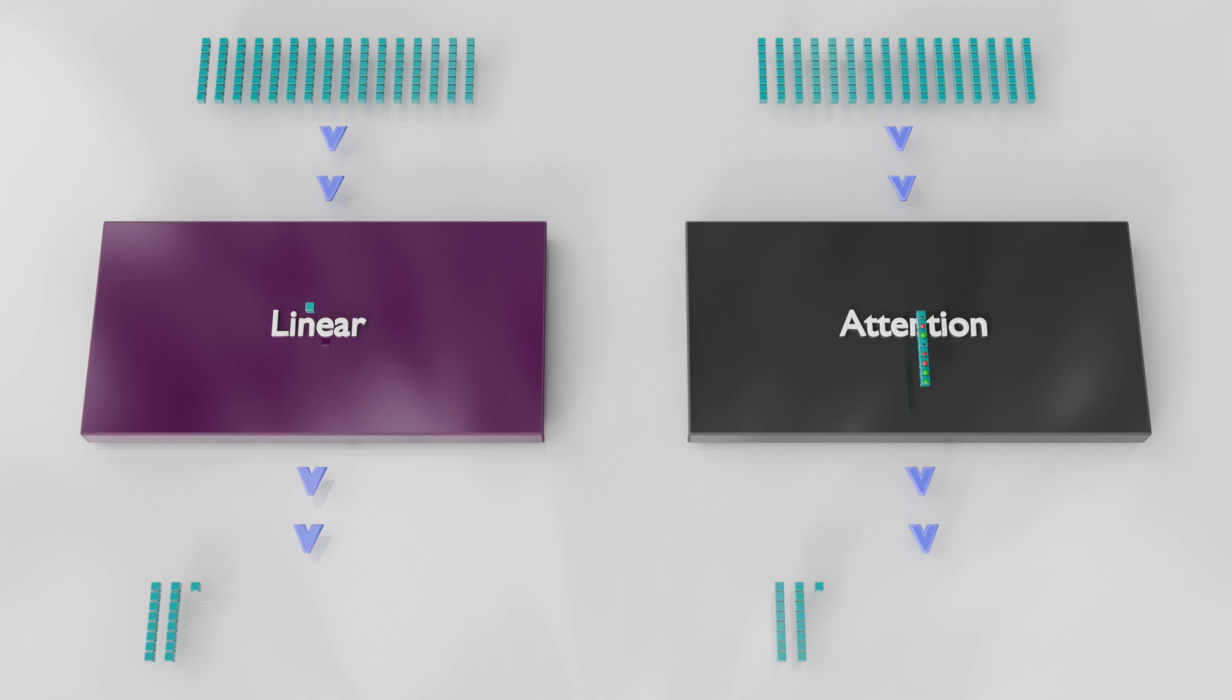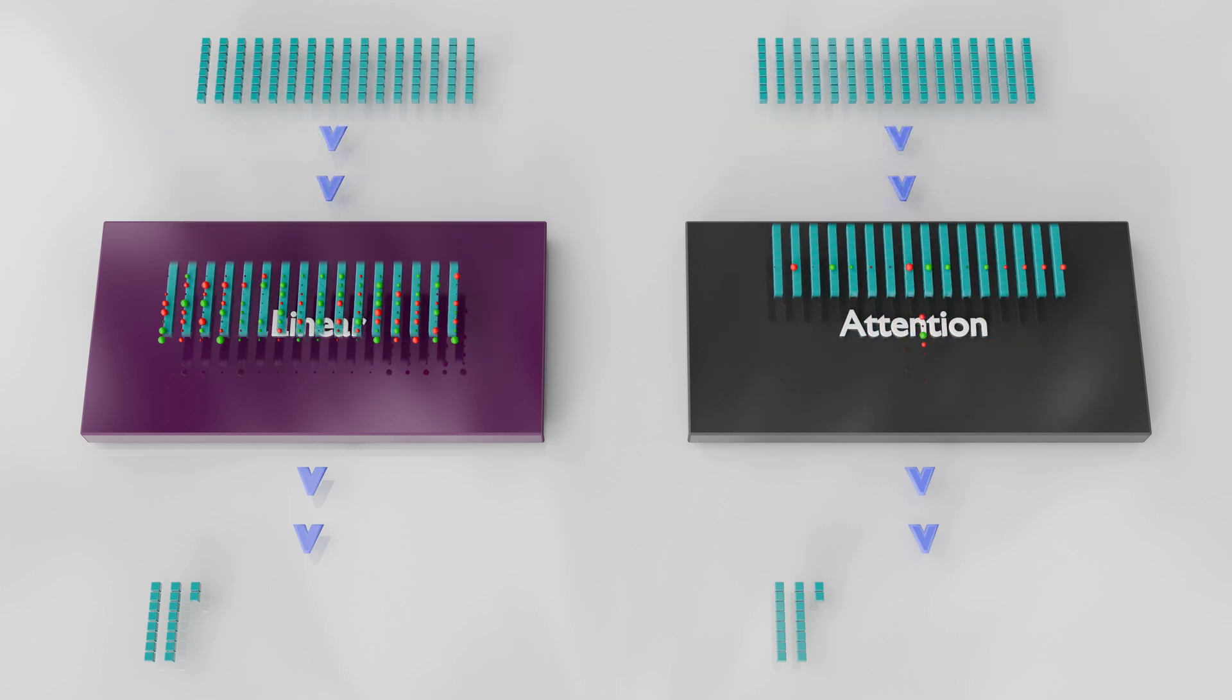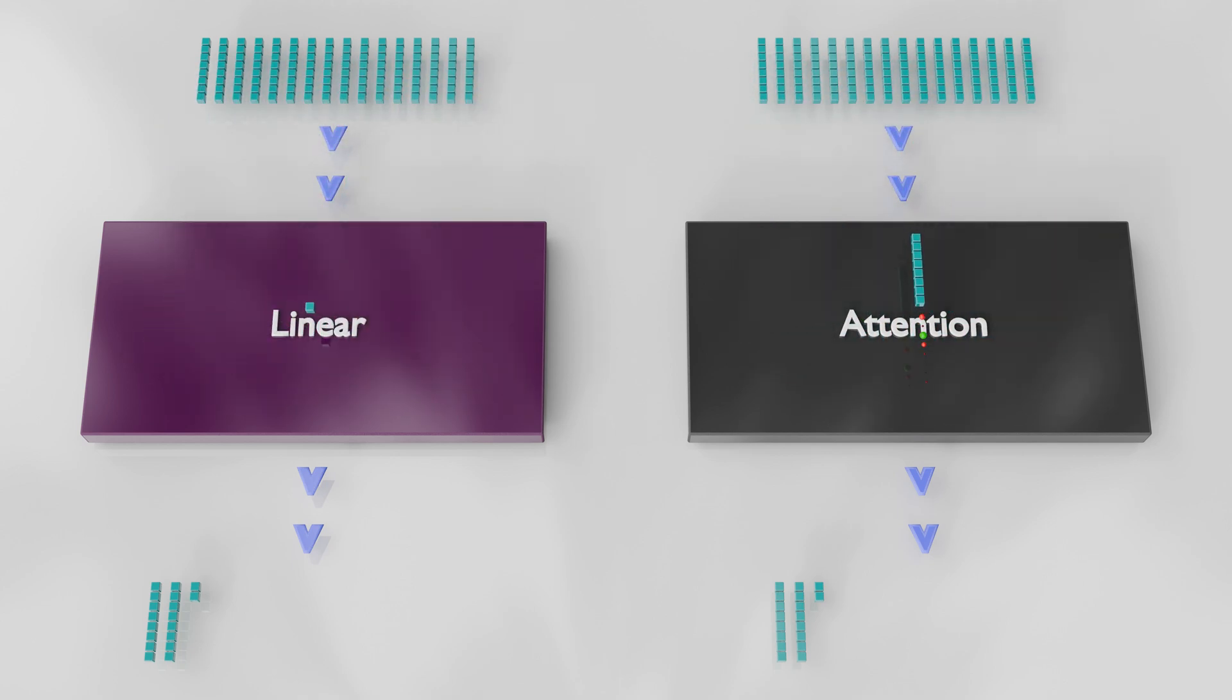So when all the computation is said and done, the attention layer still comes out well ahead of the linear layer. In our real-world ChatGPT use case, the attention layer is roughly a thousand times more computationally efficient.